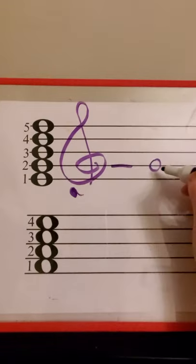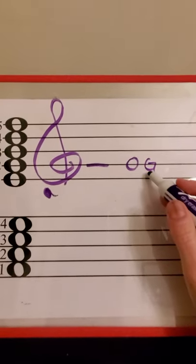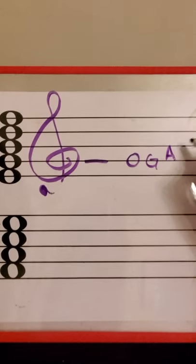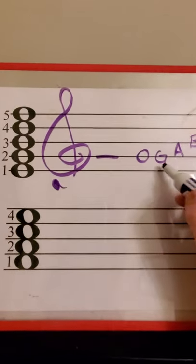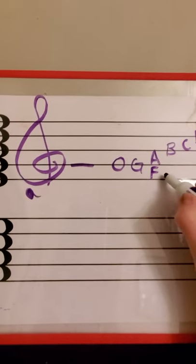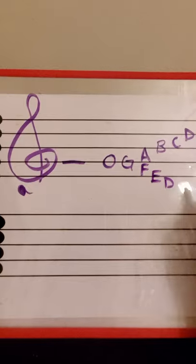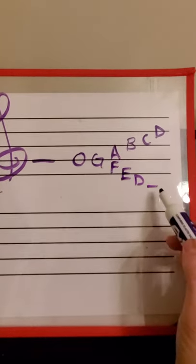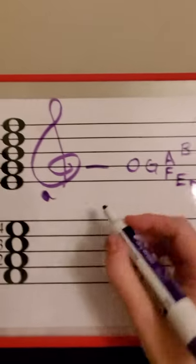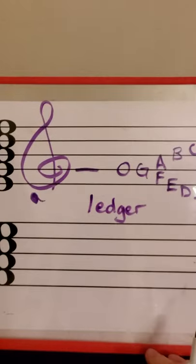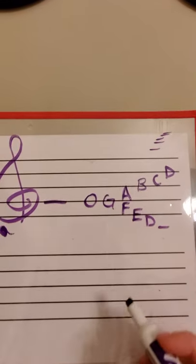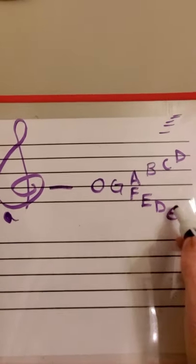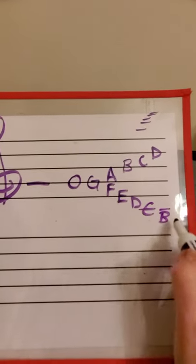So once we know that this is the letter G, we go in order. After G we start over with A, then we have B, we have C, D, and so forth. Then we have to go backwards as well. So before G in the alphabet comes F and before F is E, before E is D. And then we can extend the staff with little lines called ledger lines. We can extend them both above and below the staff as many times as we would like. So that's the letter C, that's the letter B, and so forth.